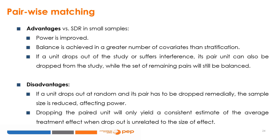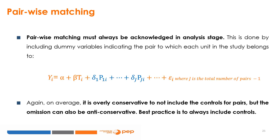Dropping the paired unit will only yield a consistent estimate of the average treatment effect when the dropout is unrelated to the size of the effect. If the dropout is related to the size of the treatment effect, we can only identify the average treatment effect for the subsample remaining when treatment is randomly offered. Just like stratification, pairwise matching must always be acknowledged at the analysis stage by including dummy variables indicating the pair to which each unit belongs. On average it is overly conservative to omit pair controls, but omission can also be anti-conservative — best practice is to always include controls.